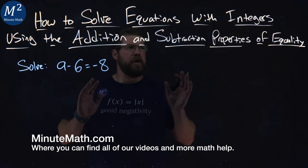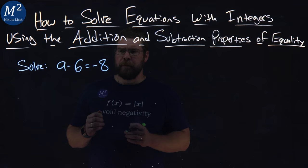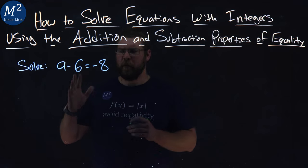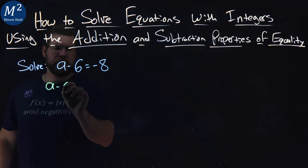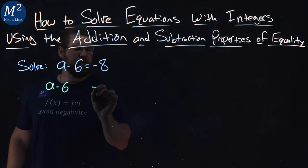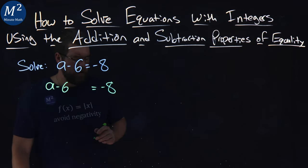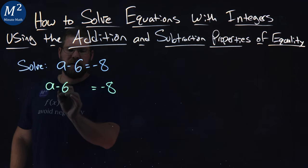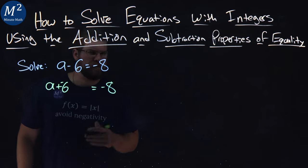Well, we're going to use our addition or subtraction property of equality here. The tricky part is we want to get a by itself, so I'm going to rewrite this: a minus 6, let's leave a space, equals negative 8. Now, I have a negative 6 here, or well, minus 6 is like adding a negative 6, right? Same thing.